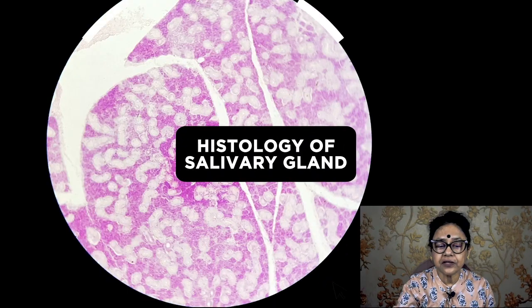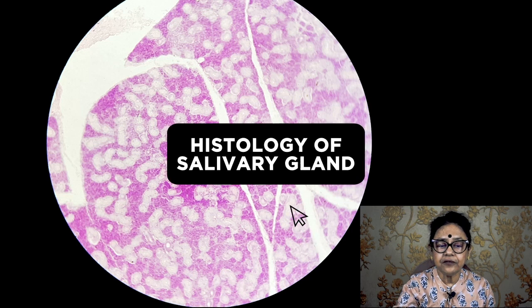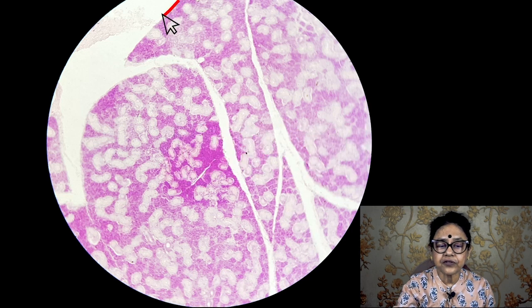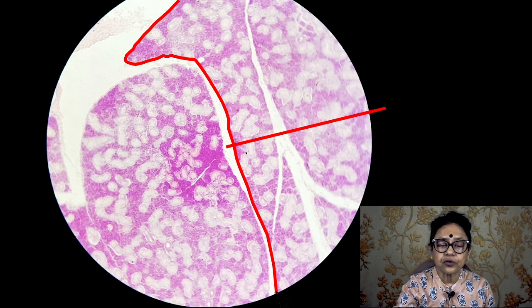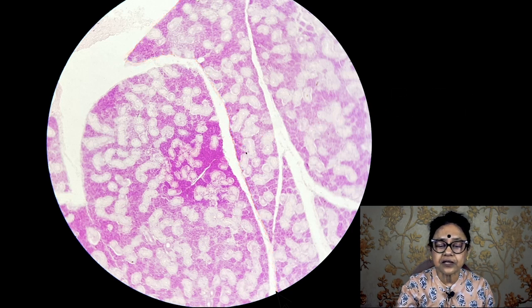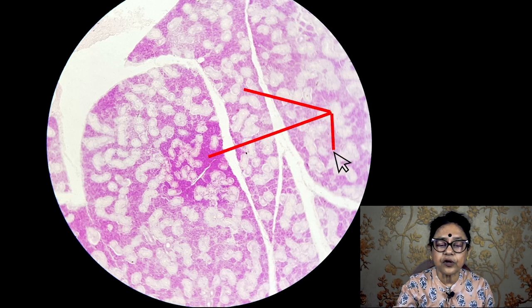To identify the salivary gland under the microscope, from the surface of the gland you will see fibrous septum going inside. The fibrous septum does not cast any shadow, so you will see this white-colored septum which divides the salivary gland into a number of lobules.